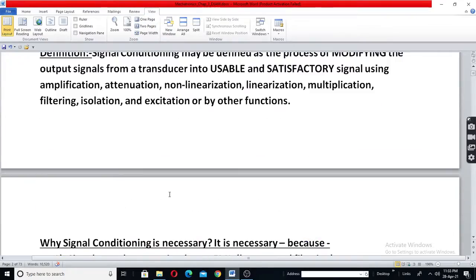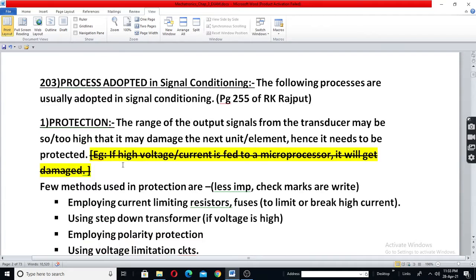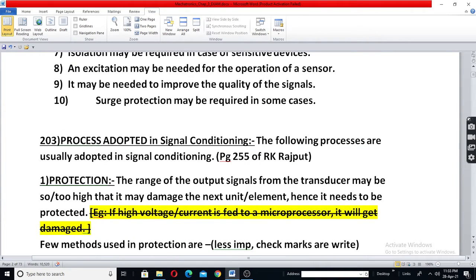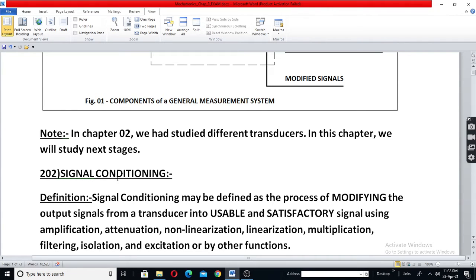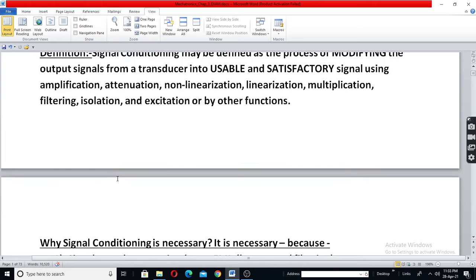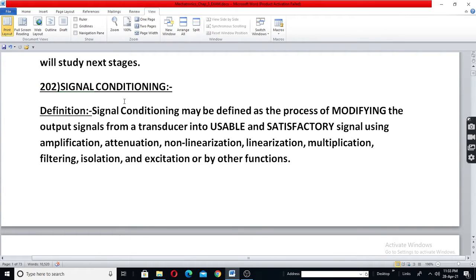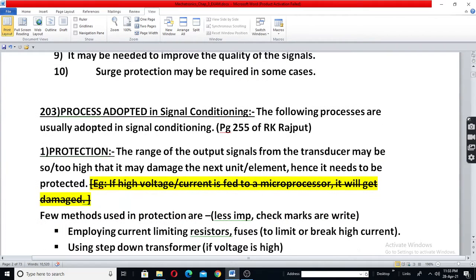So first is what is signal conditioning. Second is why it is necessary. Third is what all processes are employed in signal conditioning. First is like why should you cook food. We need food because we have to eat and we have to become healthy, etc. First is what is food. Then why food is necessary. Then what are the processes adopted in cooking. This is like that.